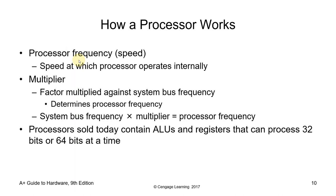Processor frequency or speed is the speed at which the processor operates internally. CPU clock speed is measured in hertz — generally gigahertz today. A CPU clock speed rate measures how many clock cycles a CPU can perform per second. The multiplier is a factor multiplied against the system bus frequency to determine the processor frequency, also called the clock ratio. For example, a 10x CPU multiplier runs the CPU at 10 times the speed of the front side bus. The CPU multiplier is changed in the BIOS setup.